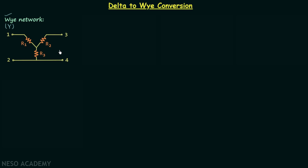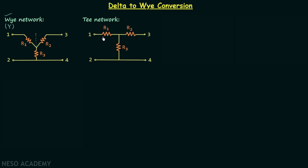Terminals 1, 2, 3, and 4 are the four terminals in this network. The same network can have a different form — if we lift a particular node to another position, we get a T-shaped network formed by R1, R2, and R3. Therefore we call this a T network. Both networks are the same; all parameters remain the same — only the form is different.